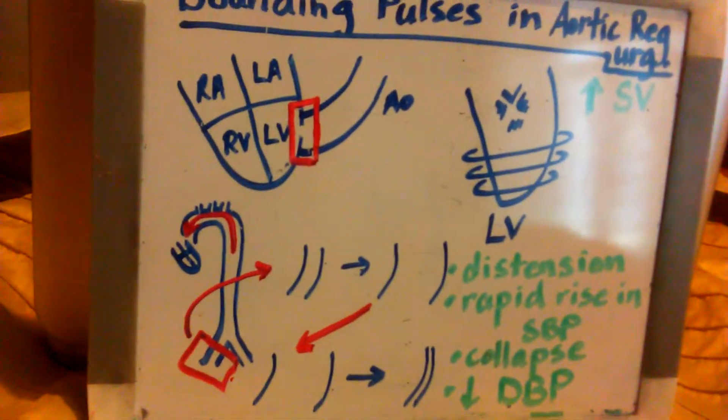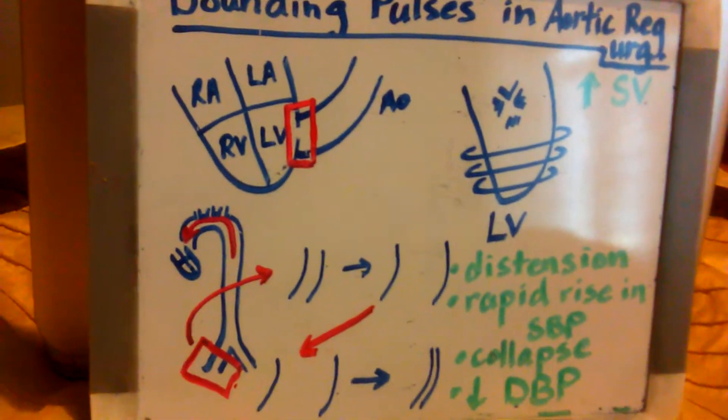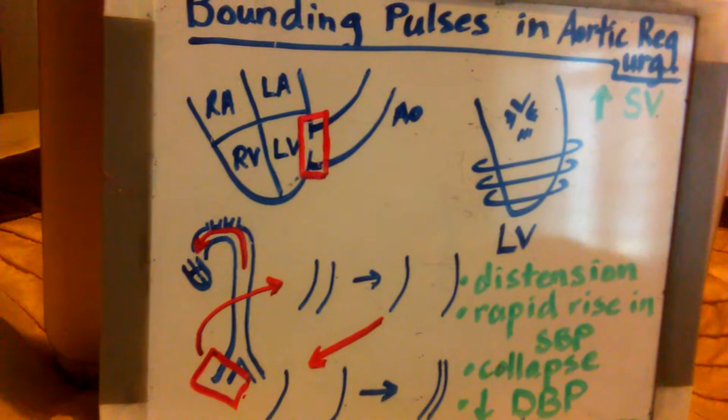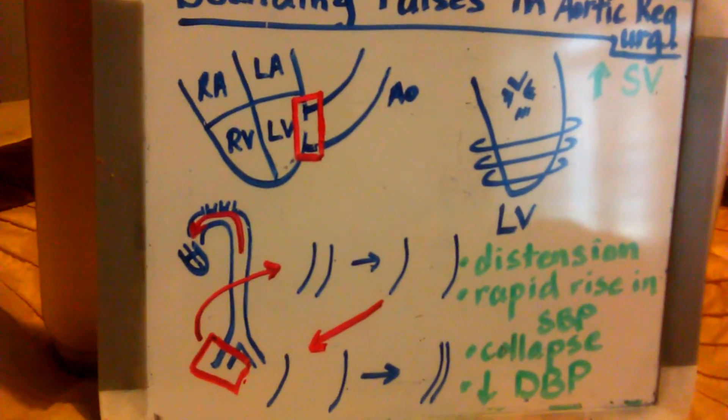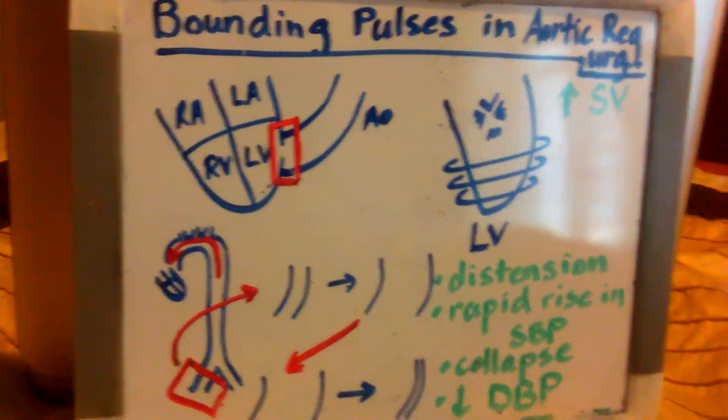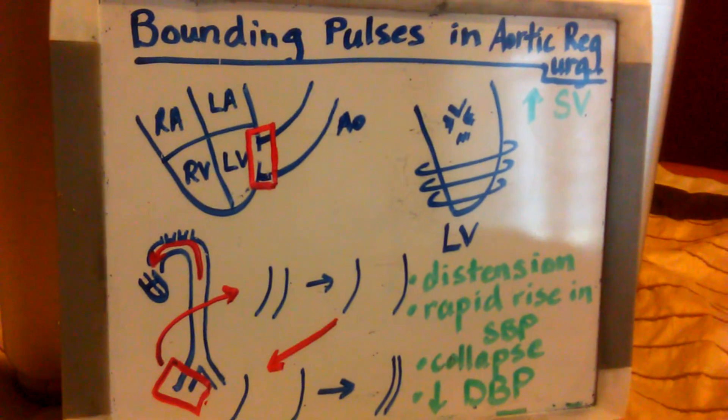This will also show up as widened pulse pressure, which is an increase in the difference between the systolic and diastolic blood pressures. Bounding pulses is also known as a water hammer pulse. Okay, that's it for this bounding pulses and aortic regurgitation. Bye.